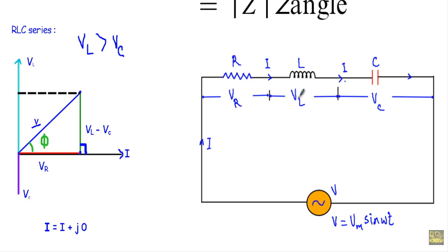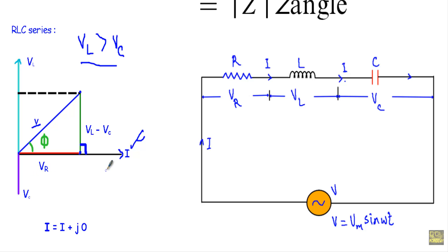As this is a series RLC circuit, there are three possible cases: VL greater than VC, VL less than VC, or VL equal to VC. Considering the case VL greater than VC, the vector diagram shows the reference phasor I, voltage VR in phase with I, and VL minus VC in the quadrature direction. The vector sum of VR and (VL − VC) gives the resultant applied voltage phasor V.